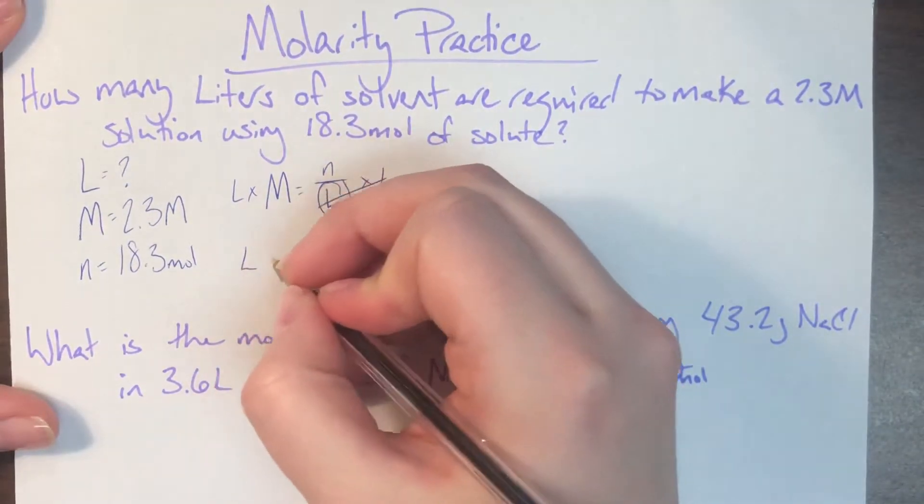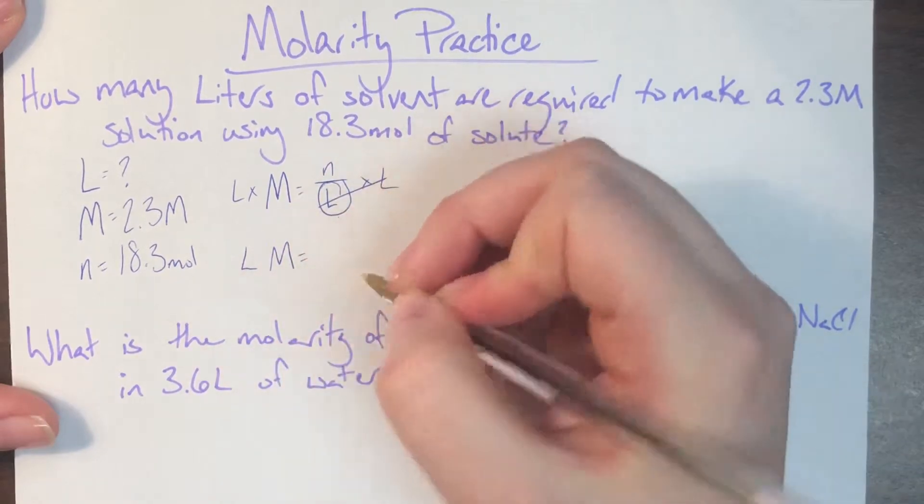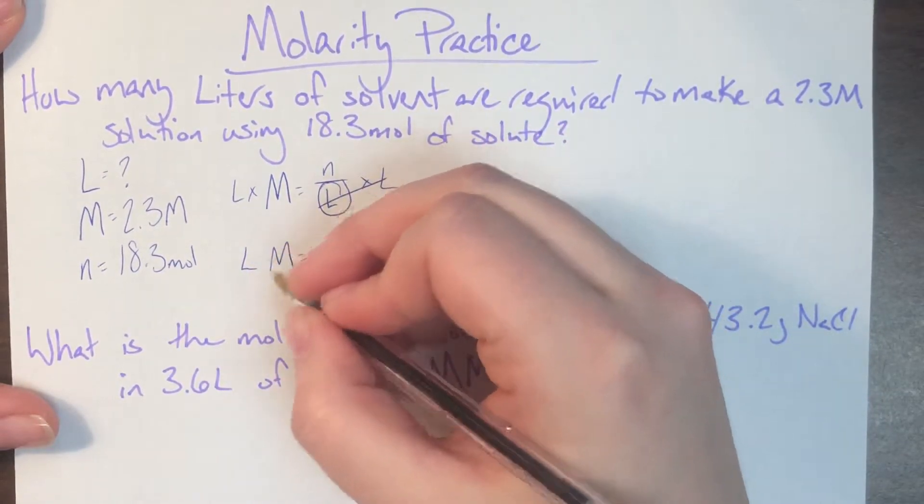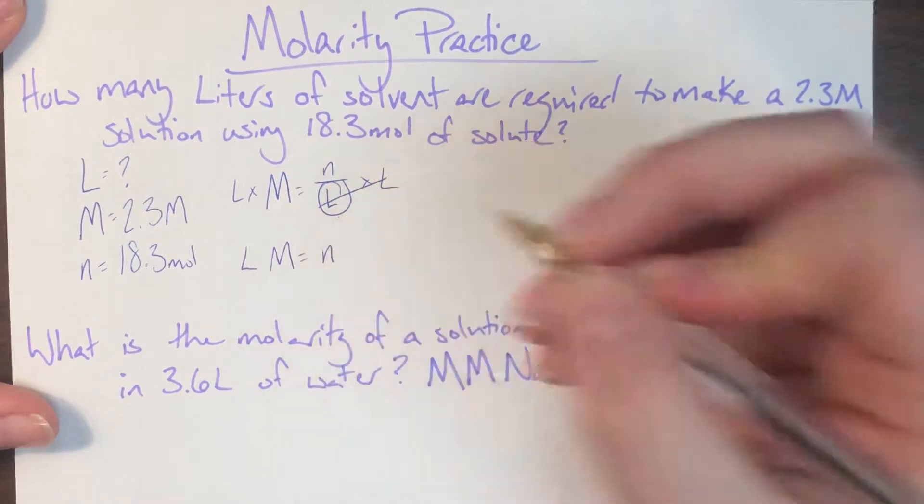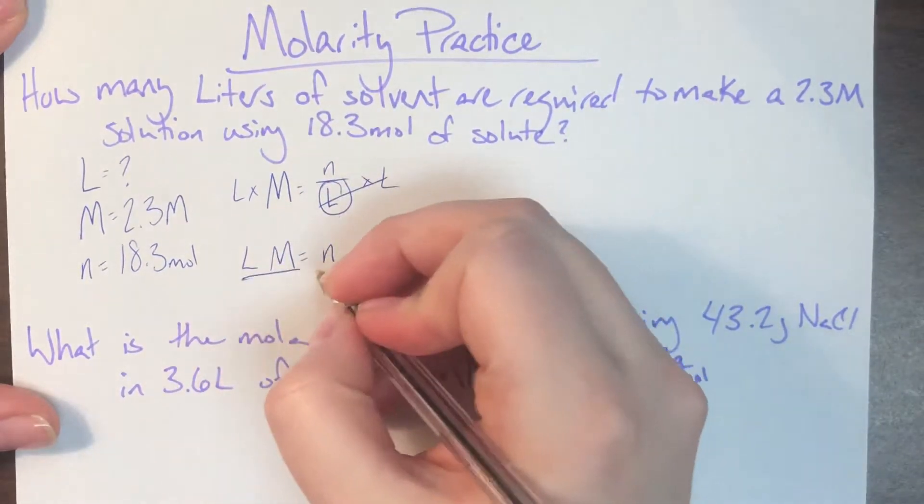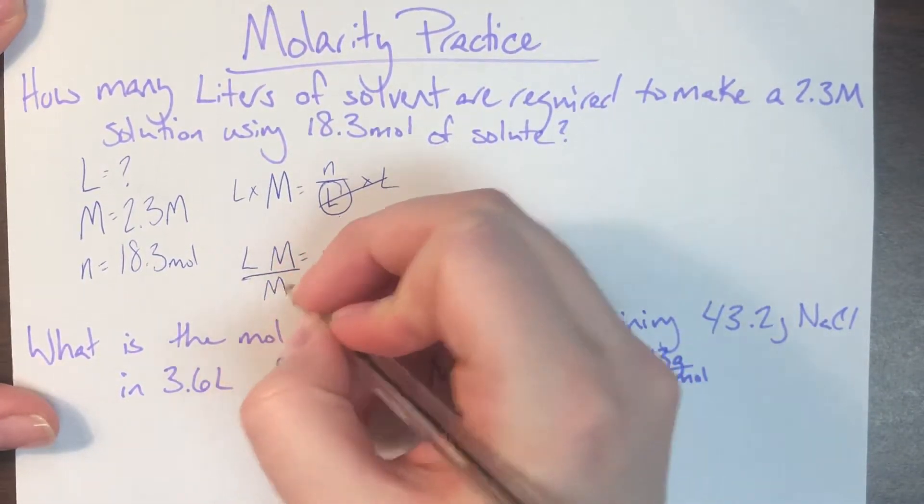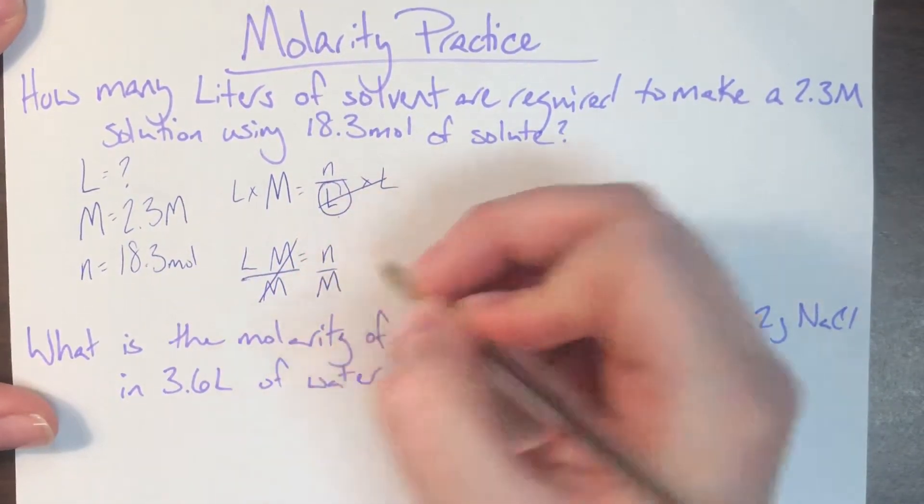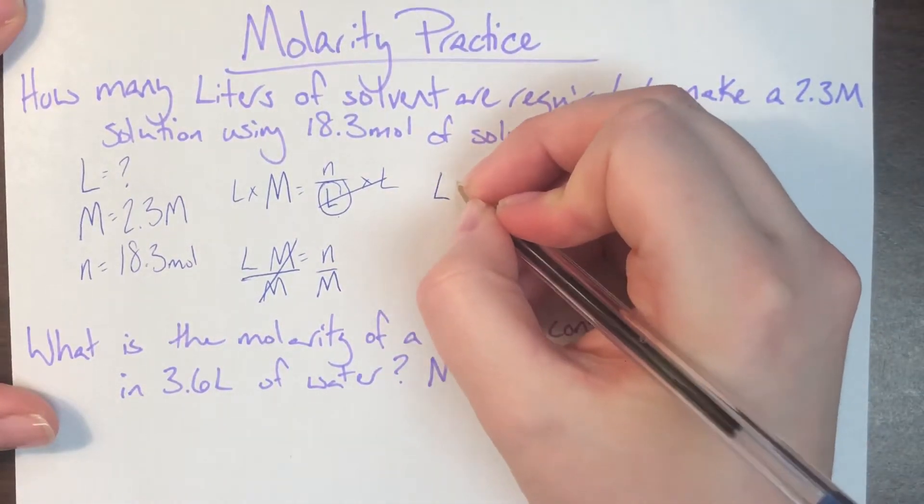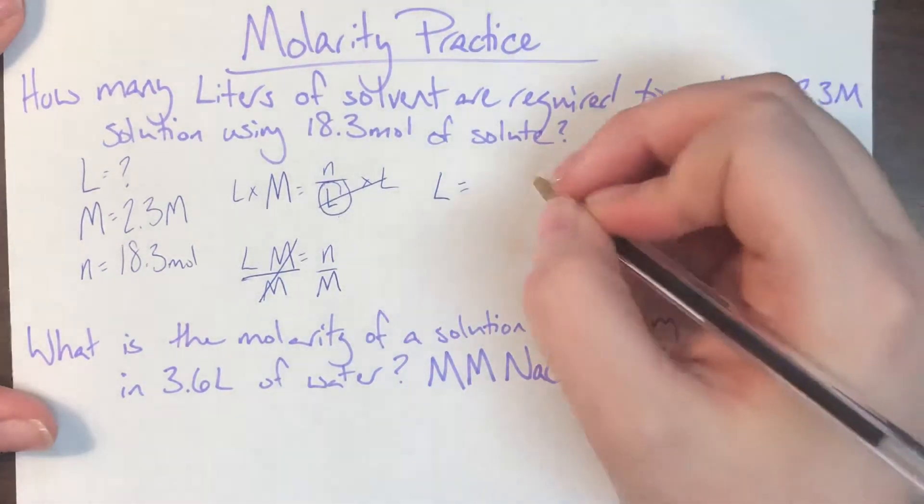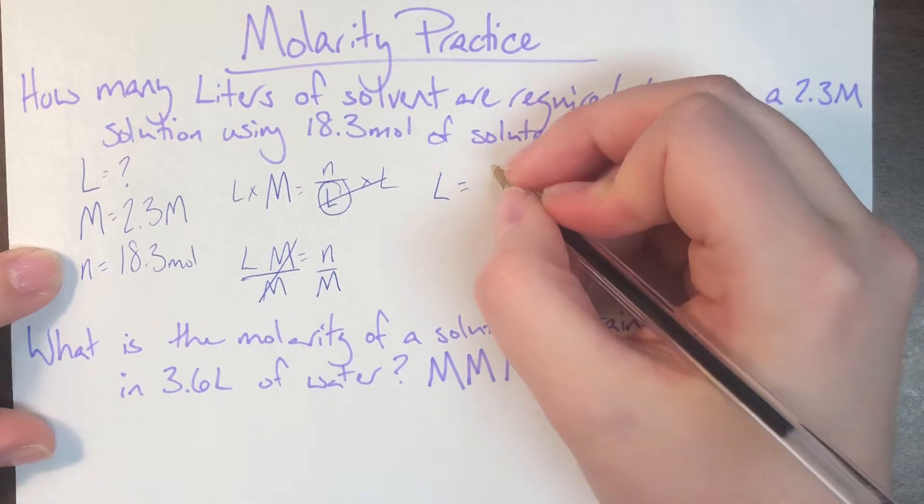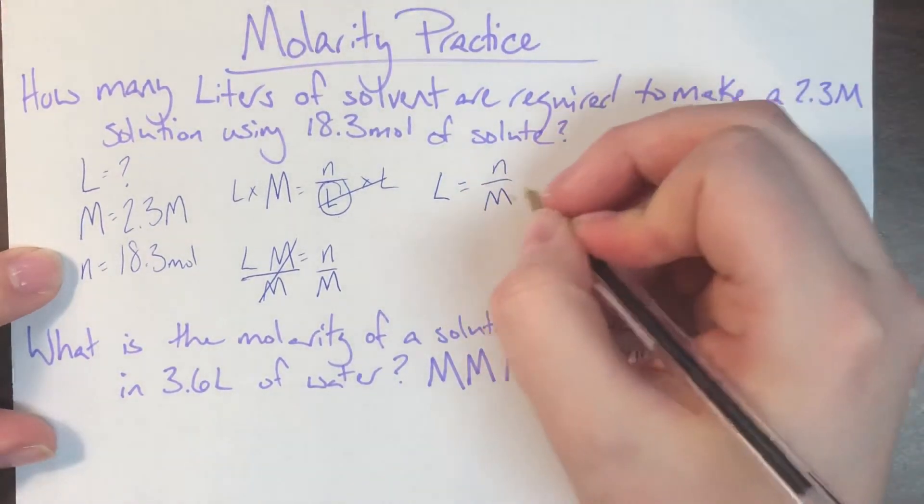But then I will be left with L times capital M, liters of solvent times molarity, is equal to the moles of solute. And I still want L alone, so I need to get rid of M that is currently messing with it, get rid of molarity. And that will leave me with that my liters of solvent are going to be equal to my moles of solute divided by my molarity.